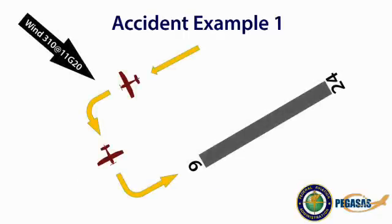Here is an illustration of the flight path. During the base to final turn, the pilot had a tailwind, and it's possible that the pilot initiated the base to final turn at the normal spot they always do, which resulted in an overshoot and a potential for a cross controlled stall.